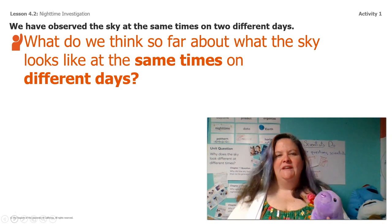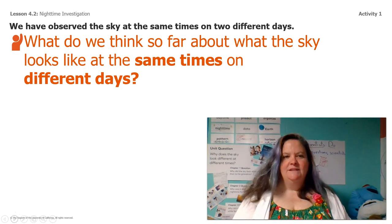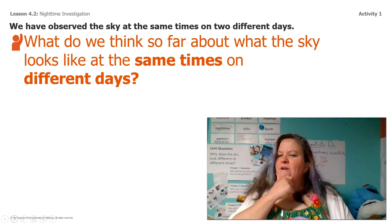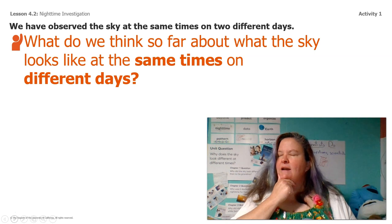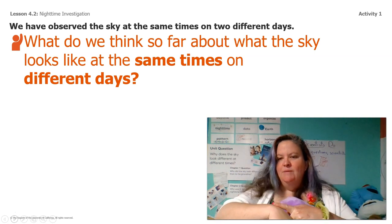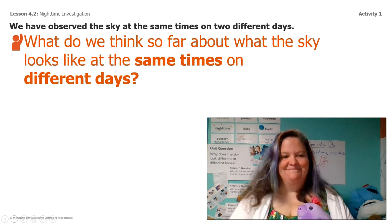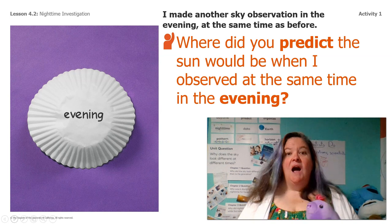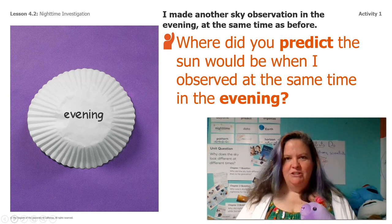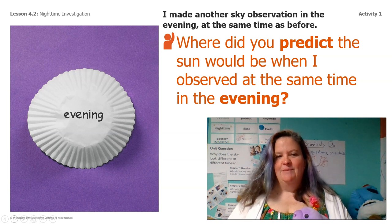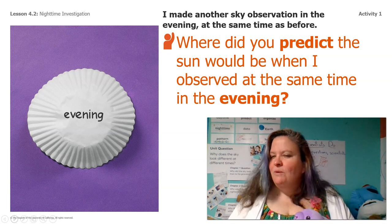So what do we think so far about what the sky looks like at the same time on different days? What have we learned so far about the sky at the same time but a different day? So I made another sky observation in the evening yesterday at the same time as before. Where did you predict the sun would be when I observed at the same time in the evening? Do you remember what your prediction was?